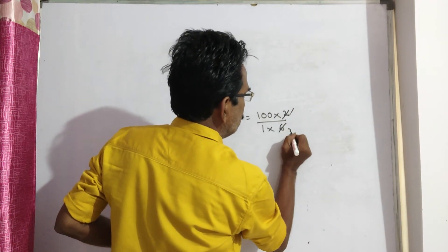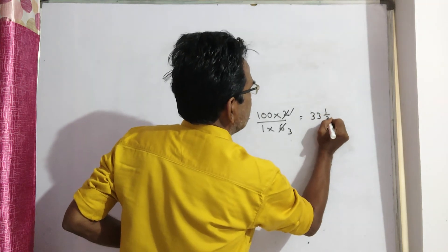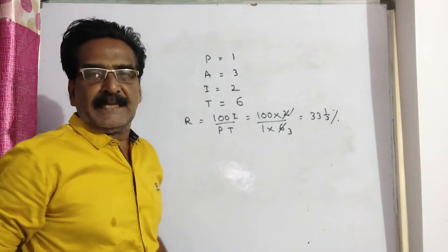Two ones is two, two threes is six. 100 divided by 3 equals 100 by 3, which means 33 and 1/3 percent, friends.